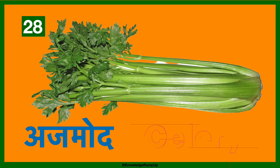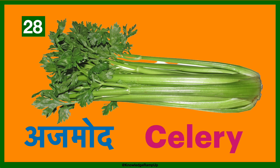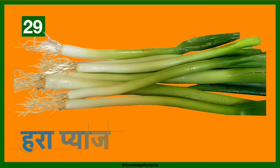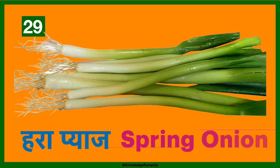Ajmod is celery in English — isko hum kai baar ajmoda bhi kehte hain hindi mein. Hara pyaaj — this is spring onion in English. However, some people also call it green onion in English.